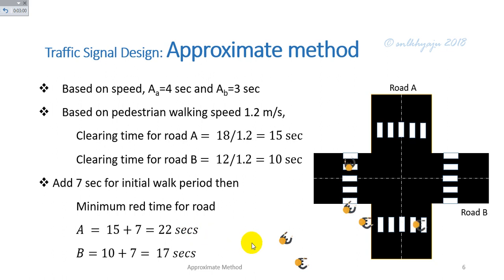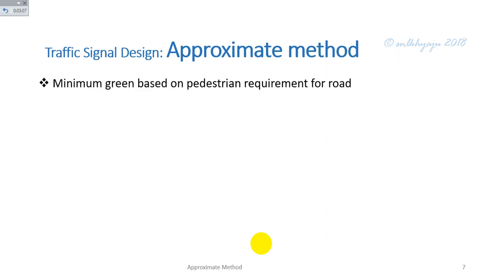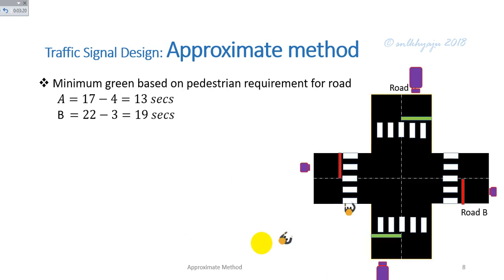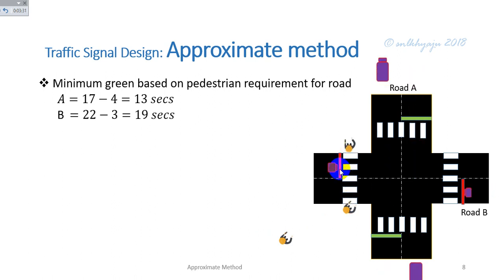The minimum green based on pedestrian requirement: for Road A equals 22 minus the amber time of 4 seconds, giving 20 seconds — wait, that is corrected to 17 minus... the minimum green for Road A is 20 seconds and for Road B is 22 minus 3 equals 19 seconds. The minimum green for Road A is effectively the red time for Road B.